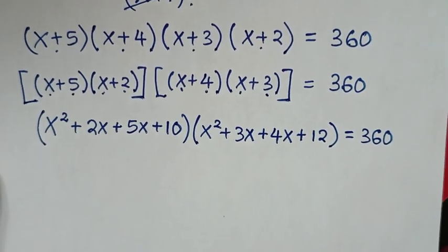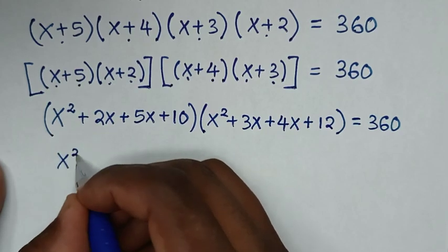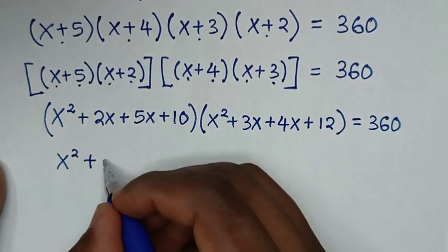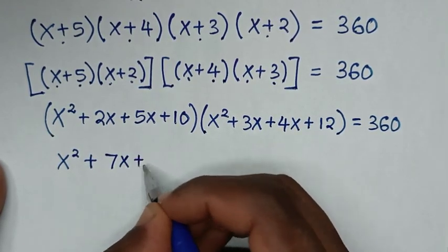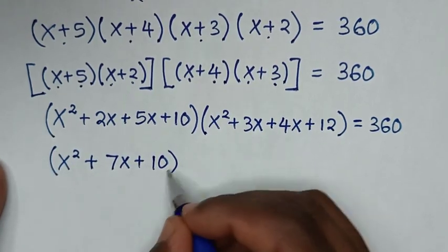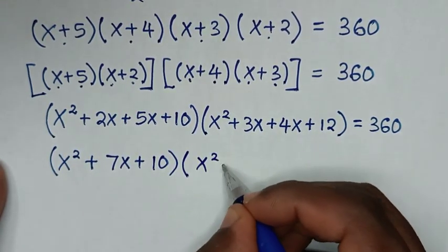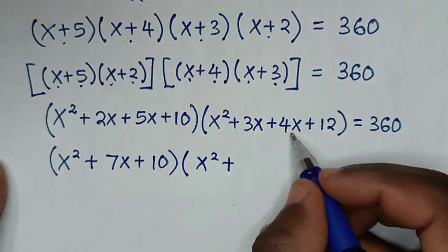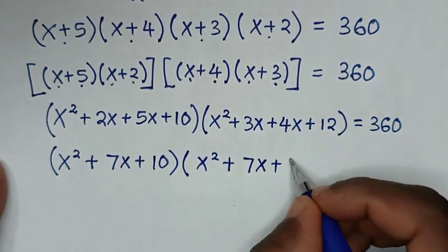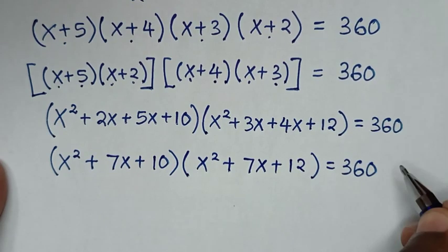Expanding confirms: (x+5)(x+2) = x²+2x+5x+10 = x²+7x+10, and (x+4)(x+3) = x²+3x+4x+12 = x²+7x+12. So we have (x²+7x+10)(x²+7x+12) = 360.